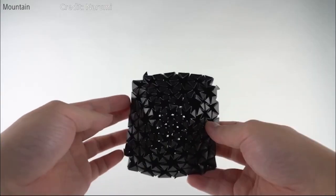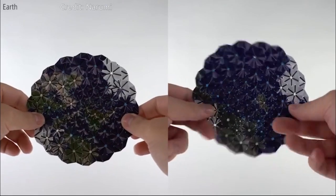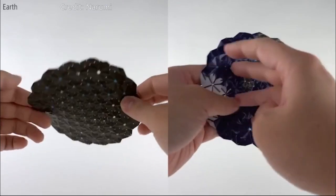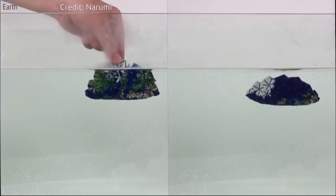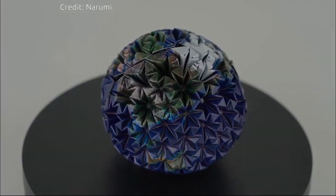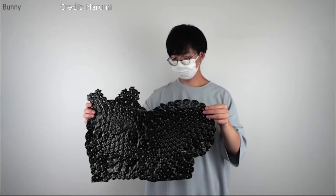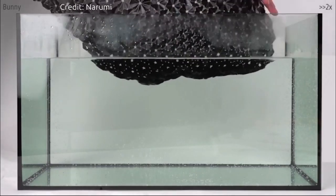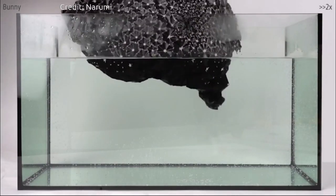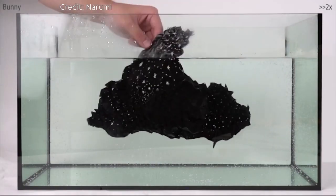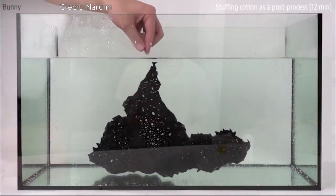Researcher Koya Narumi from the University of Tokyo says that their team discovered how to use accessible tools and materials to create self-folding 4D objects. Essentially, they are creating flat sheets with origami patterns on them, and these patterns can be complex, taking even a skilled origami artist a long time to form.